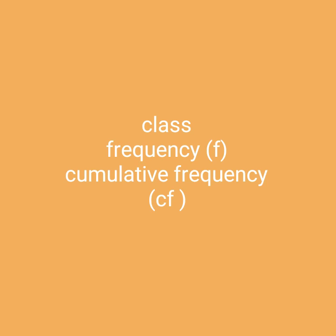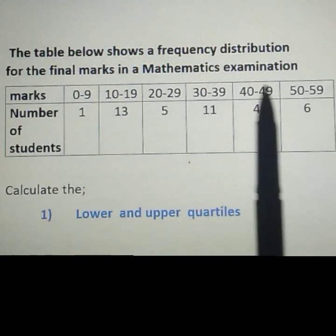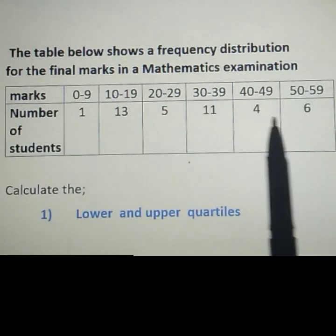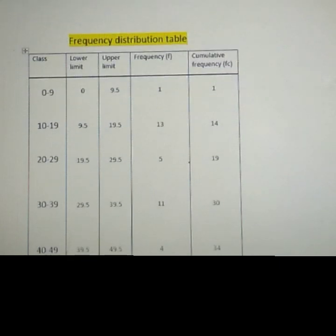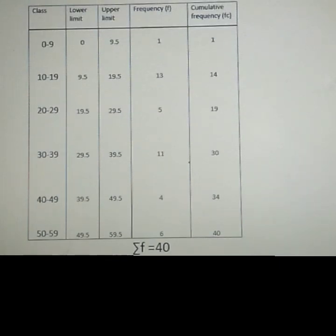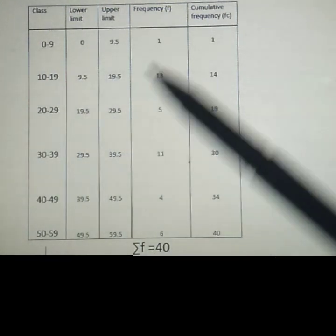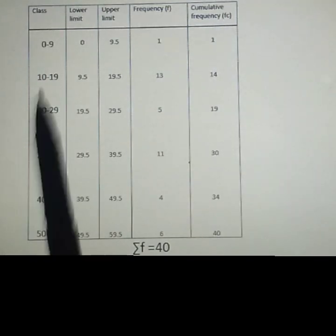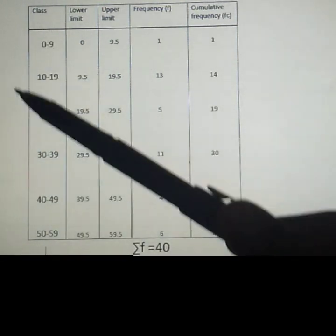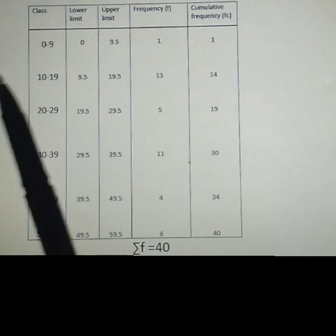In our frequency distribution table we need to have at least three important columns: the class, the frequency, and the cumulative frequency. The frequency column and the class column are already given in the question. I added two more columns — lower limit and upper limit — to make our work easy, along with the cumulative frequency column.